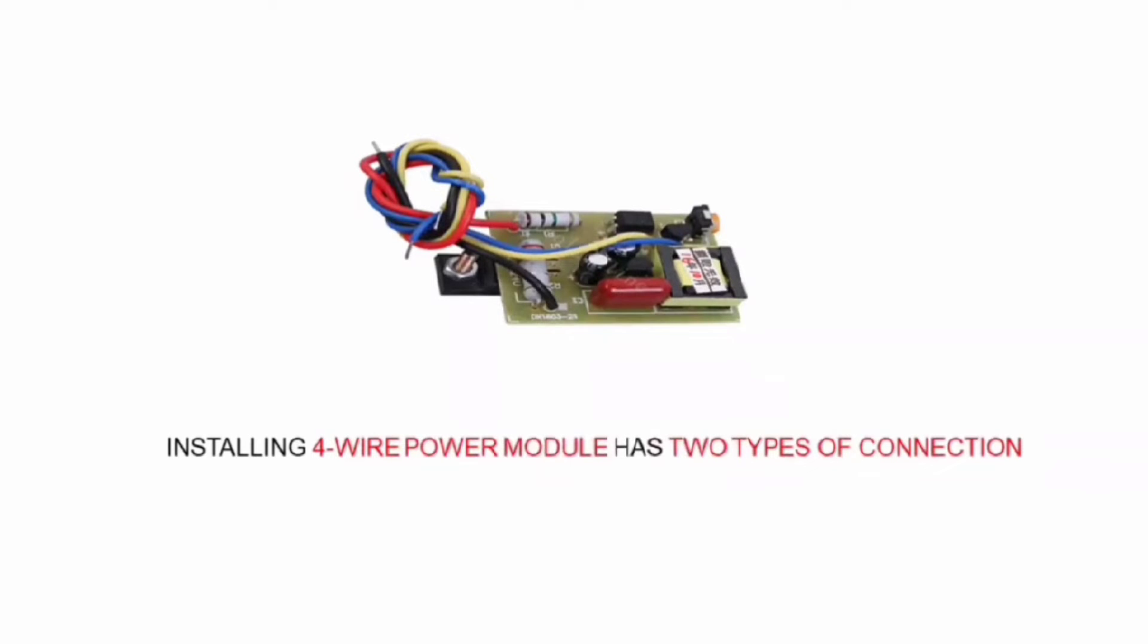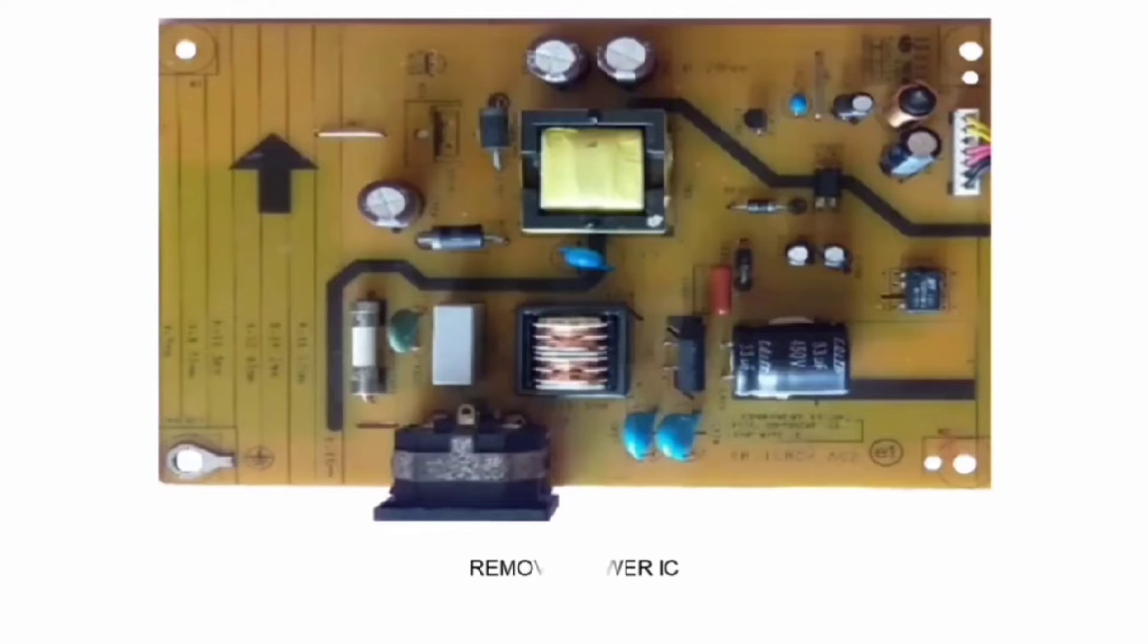Installing 4-wire power module has two types of connection. Remove the power IC.